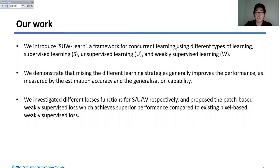In this paper, we propose a framework SUW-Learn for concurrent learning based on different learning strategies: supervised, unsupervised, and weakly supervised. We show that mixing these learning strategies generally improves the performance, such as the estimation accuracy and generalization capability.